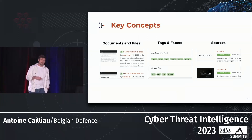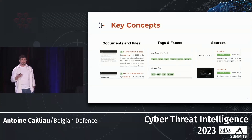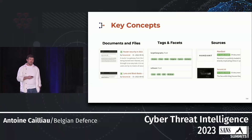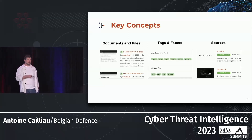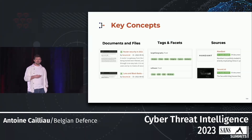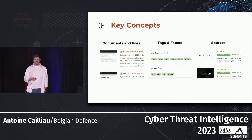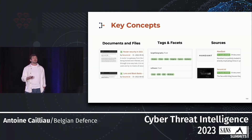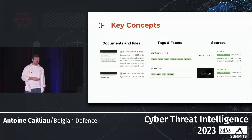We use tags to organize information, and we group tags in coherent sets that we call facets. A facet is a set of tags that is coherent — for example, a bunch of countries as tags in the facet 'target country,' used to categorize a threat report mentioning an attack targeting a specific country. We also have facets for software. All documents are written by sources and we keep track of all those sources. General analysts can focus only on sources that have been vetted by the CTI team.